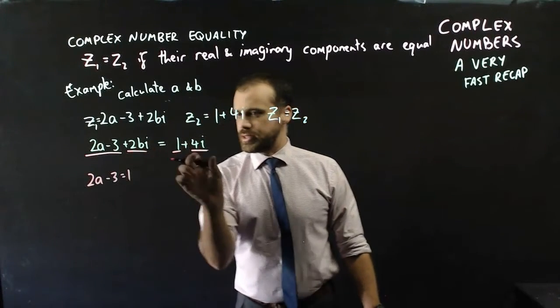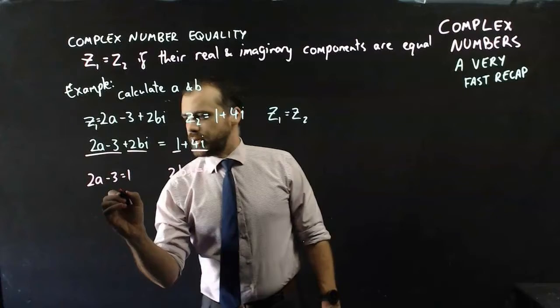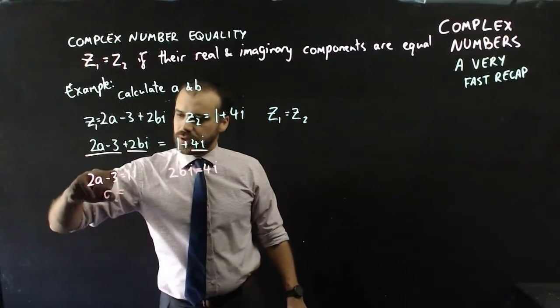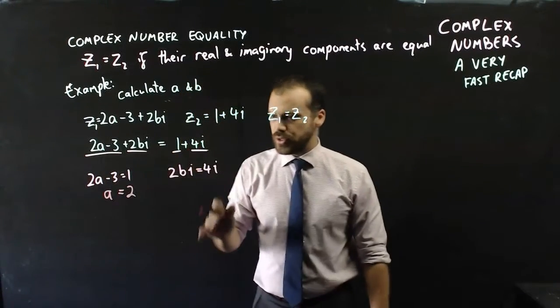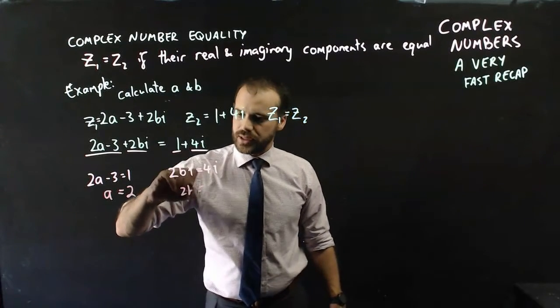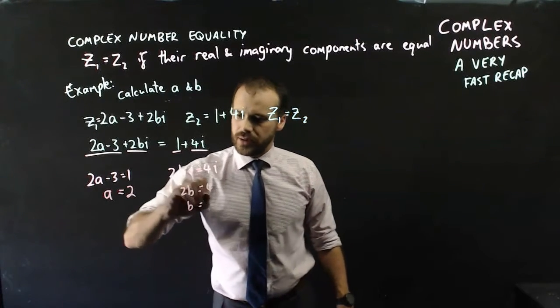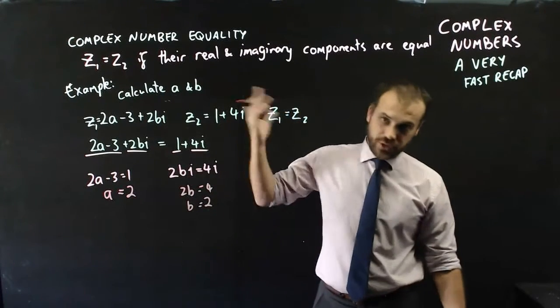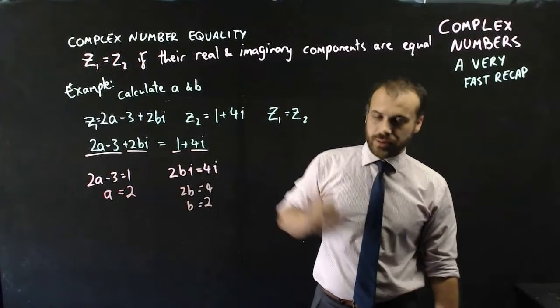So this is equal to that, and this is equal to that. Once you know that, you can do some grade 8 algebra and know that a is equal to 2 there. Now, with this bit here, we can cancel out those i's, so we get 2b equals 4, and b equals 2. a and b both equal 2. That's complex number equality.